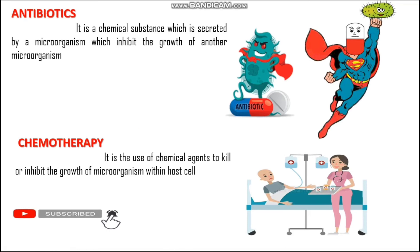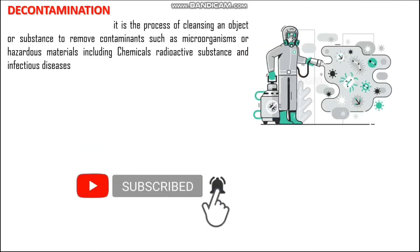Next we have chemotherapy. Chemotherapy is a chemical agent used to kill or inhibit the growth of microorganisms within the host cell. Chemotherapeutic drugs are given to patients affected by microorganisms. The patient consumes the chemotherapeutic agent, which then kills the microorganism present inside the host organism. Chemotherapeutic agents also have some side effects.